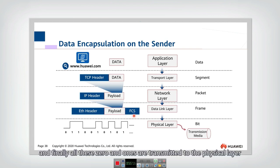Finally, all these zeros and ones are transmitted to the physical layer. They will translate these data into signals, the bit streams, and then transmit to the media. In every layer, they will add a header and make a new packet. This is called encapsulation.